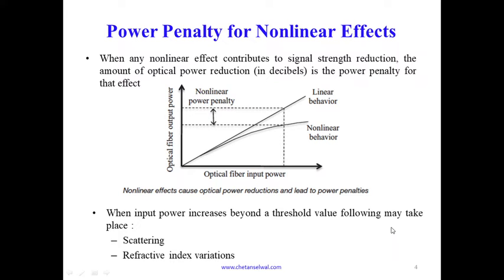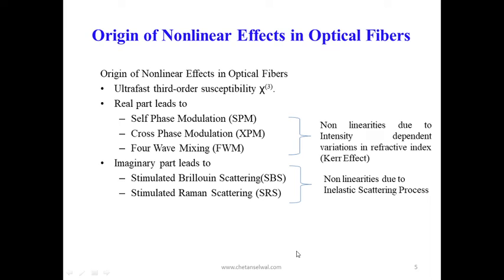When input power increases beyond a threshold value, either of two effects may take place: scattering or refractive index variation. The origin of non-linear effects in optical fiber is due to ultra-fast third-order susceptibility CHI-3, which is a complex quantity with both real and imaginary parts. The real part of susceptibility leads to self-phase modulation (SPM), cross-phase modulation (XPM), and four-wave mixing (FWM) — these three non-linearities arise from intensity-dependent variation in refractive index, also called the Kerr effect. The imaginary part leads to stimulated Brillouin scattering (SBS) or stimulated Raman scattering (SRS), which are due to inelastic scattering processes.